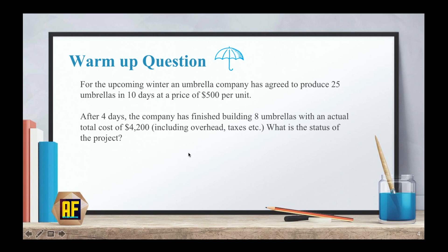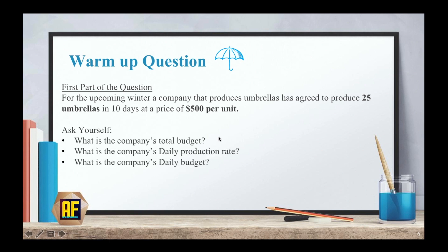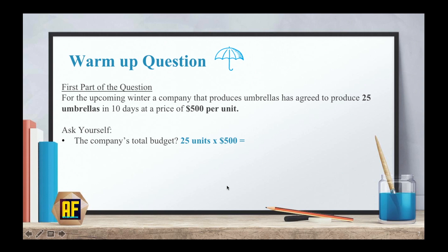By solving this question, this will help you better understand how we actually generate the EV, PV, and AC that we talked about in the previous video. Let's analyze the first part of the question. The company produces 25 umbrellas in 10 days at a price of $500 per unit. Ask yourself: what is the company's total budget, daily production rate, and daily budget? The company's total budget is 25 units times $500 per unit, which equals $12,500.